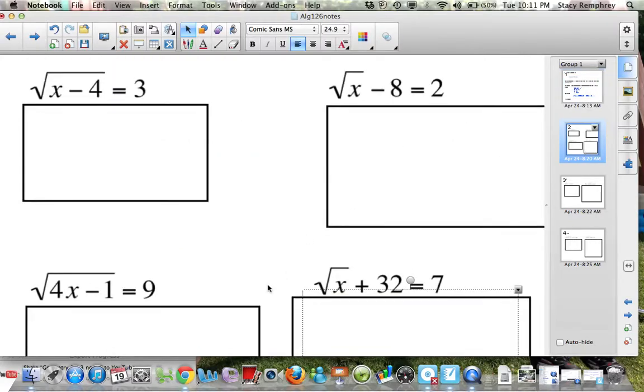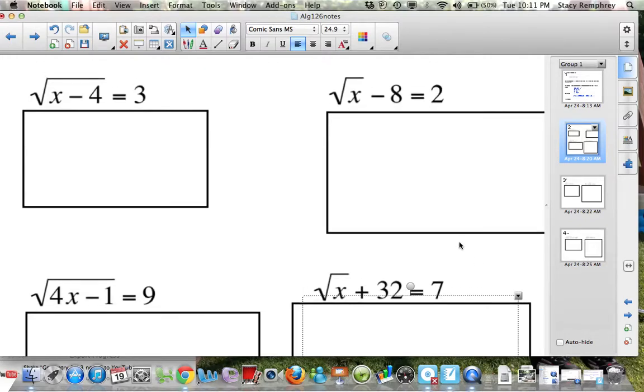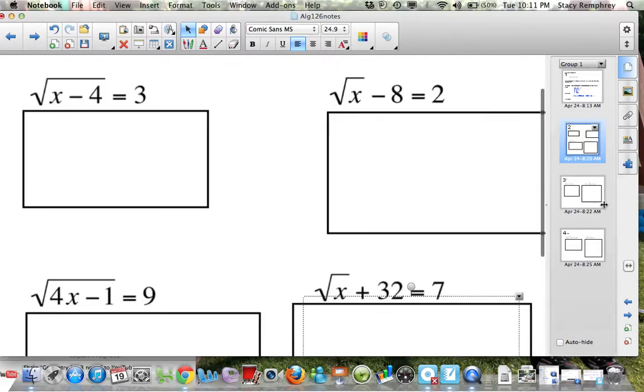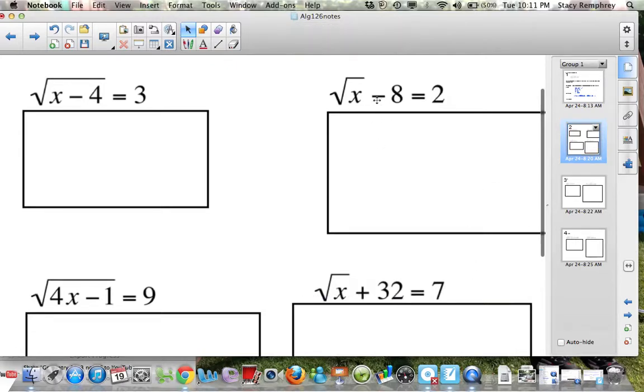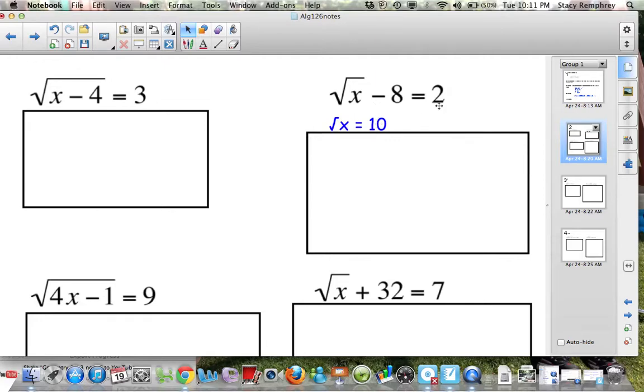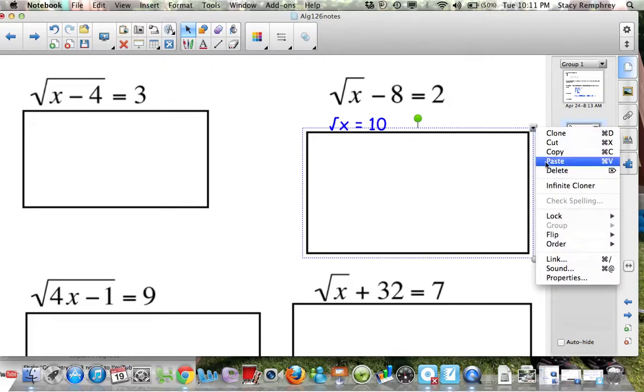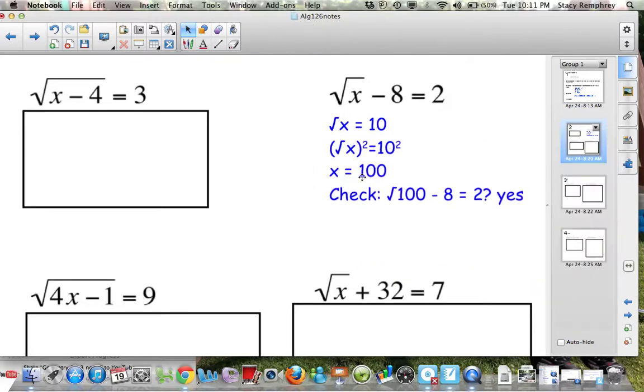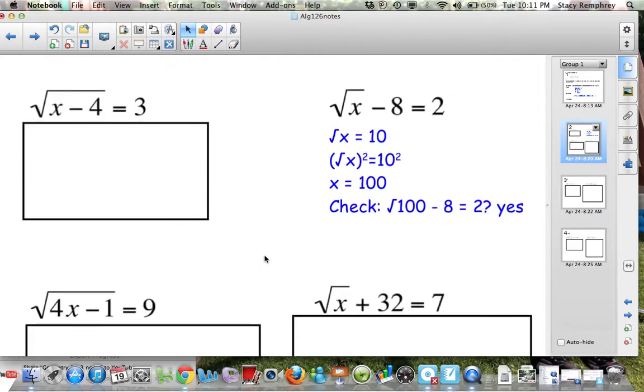For this one, let me help you with this one, because this involves that first step of making sure you isolate the square root first. The first thing I did was I added 8 to both sides. Do not square it first. You have to get the radical alone first. Then I followed through with squaring both sides and did the check. I would like you to try the other three problems. Push pause now, work through these three problems, and then come back and check your answers.